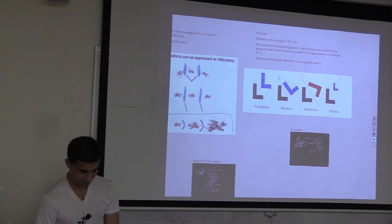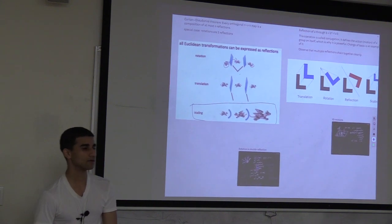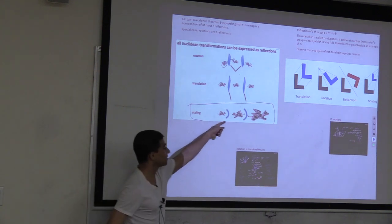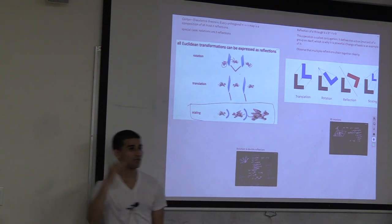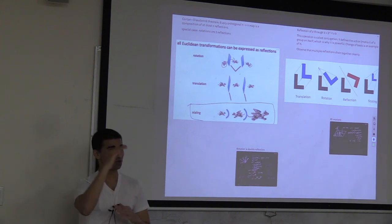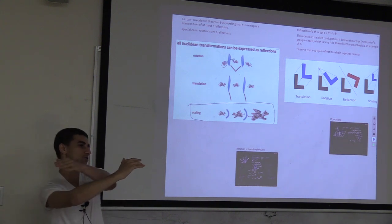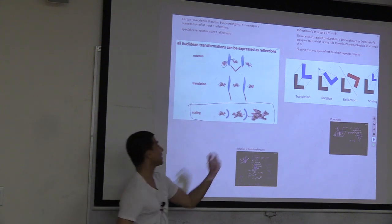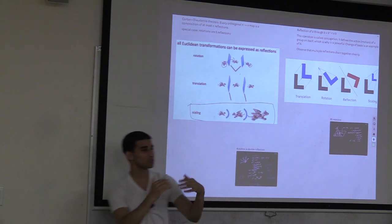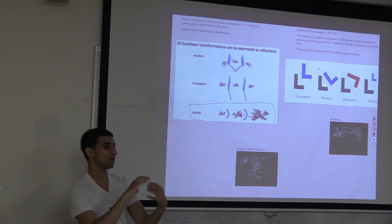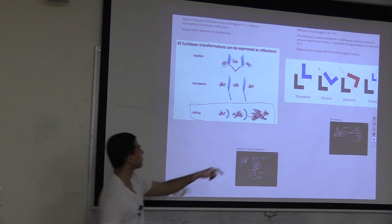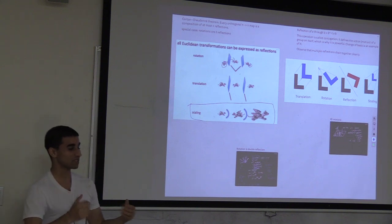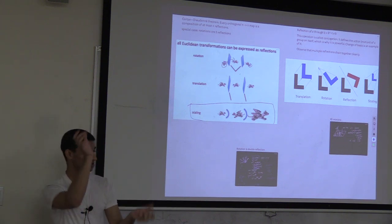Scaling: reflecting through a circle gives dilation; two reflections through concentric circles give a scaling - if you reflect the other way, the thing shrinks. Very much like a magnifying glass or telescope, because it essentially is one.